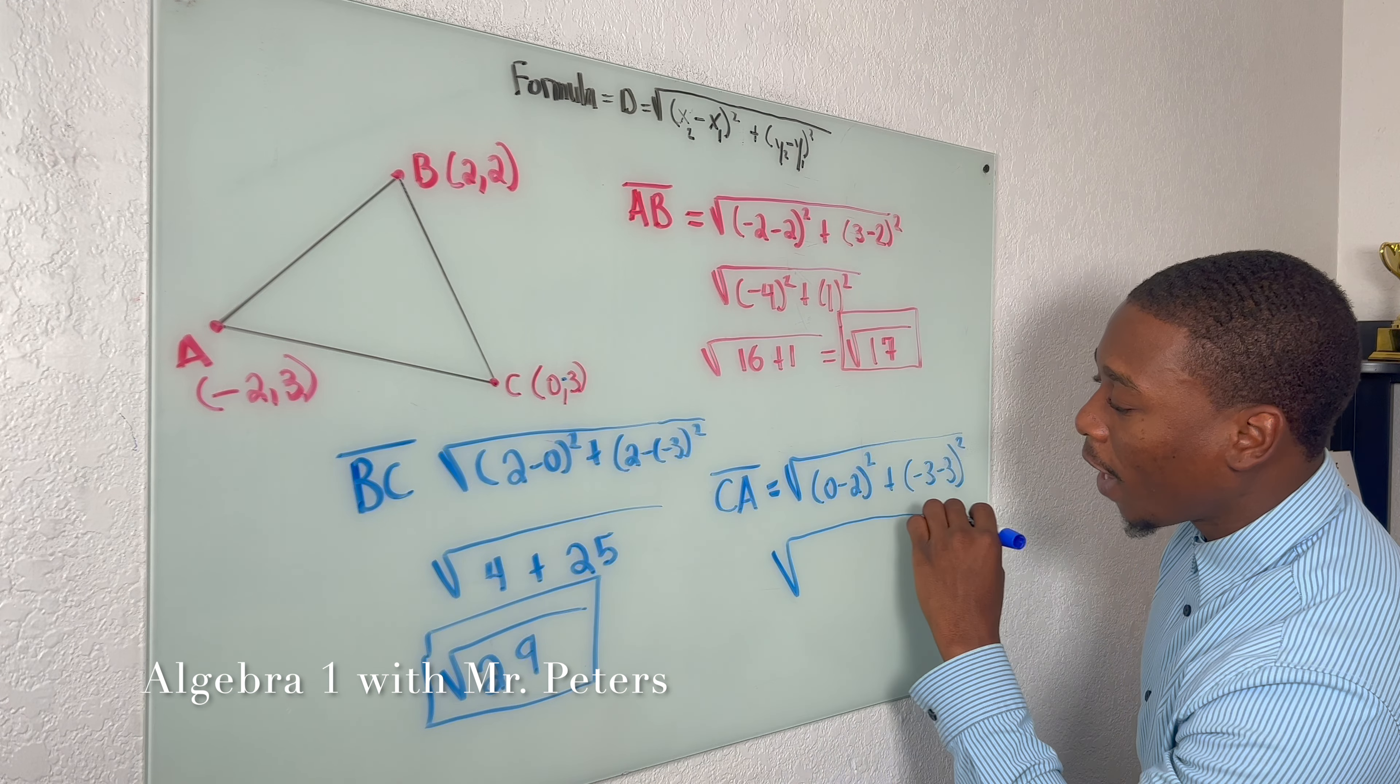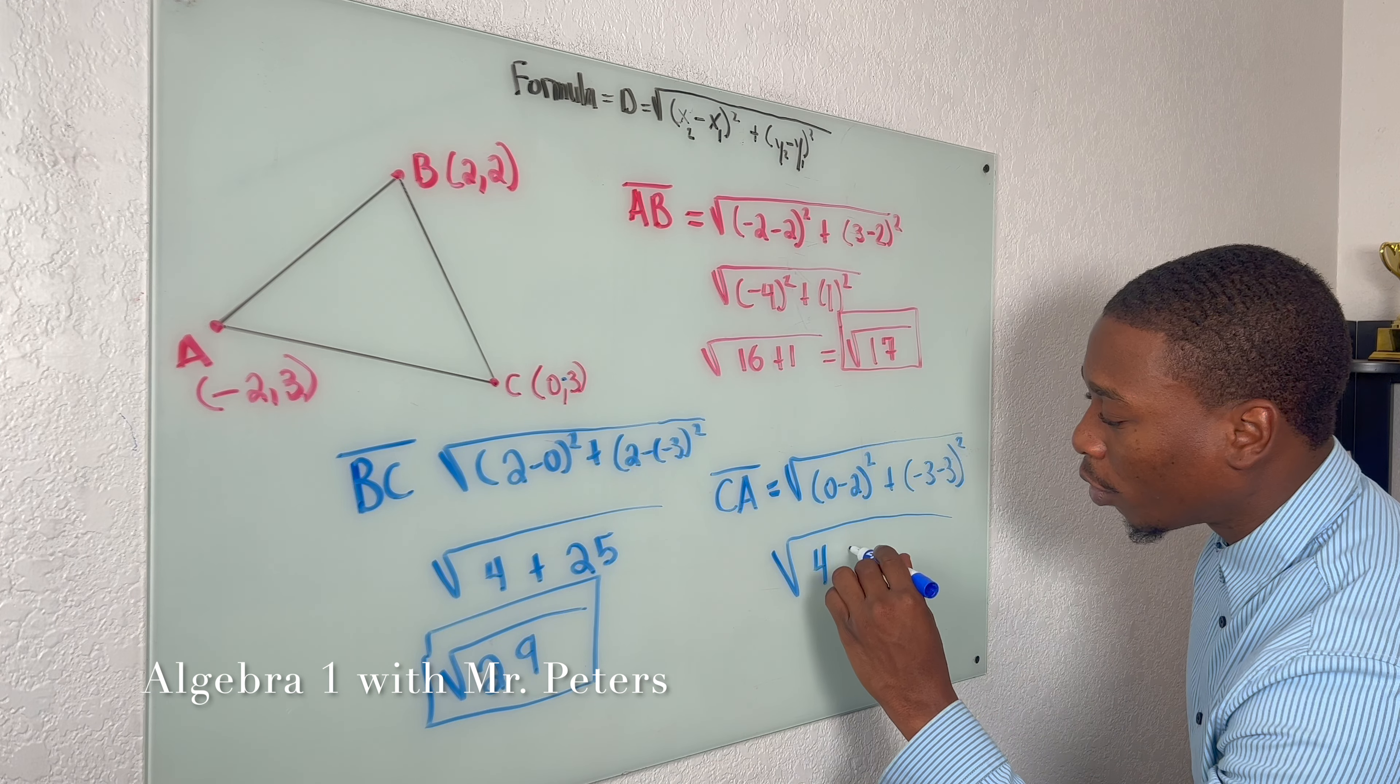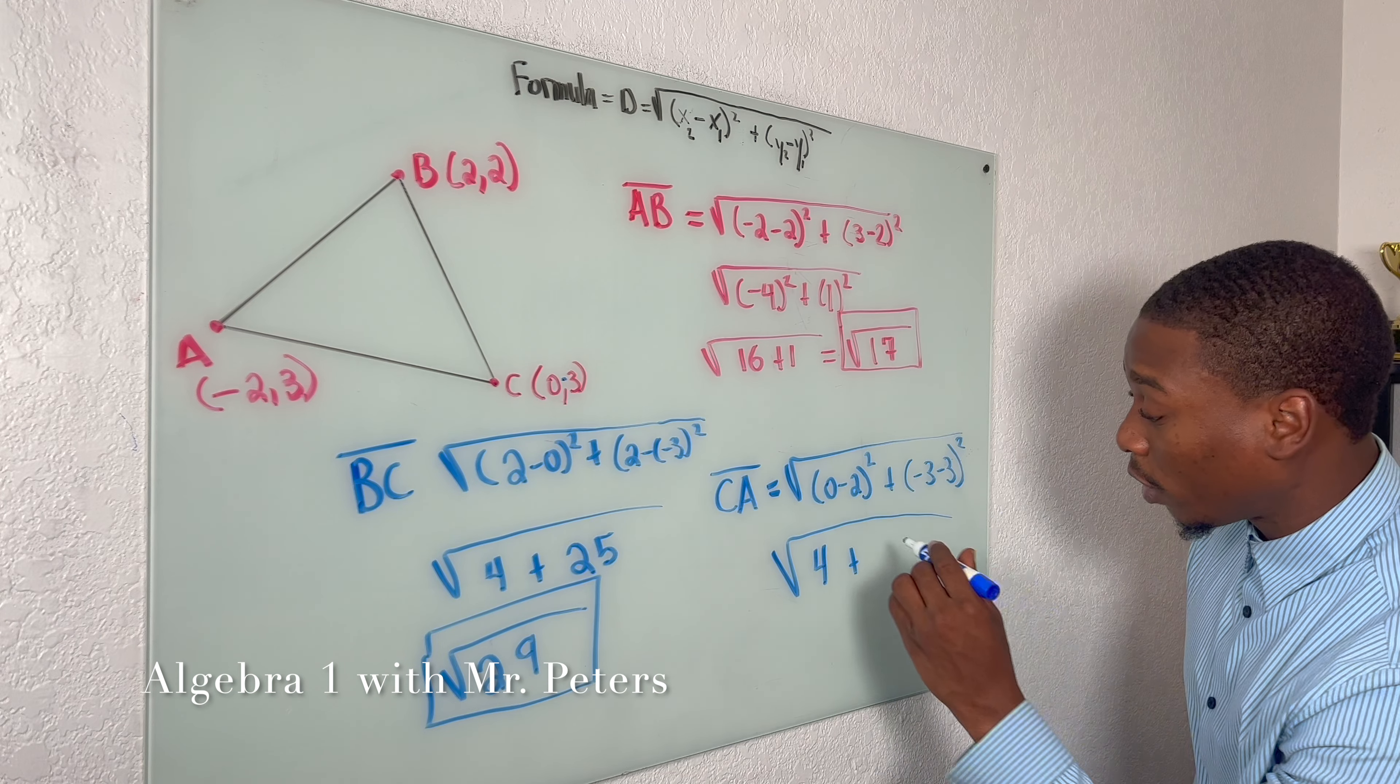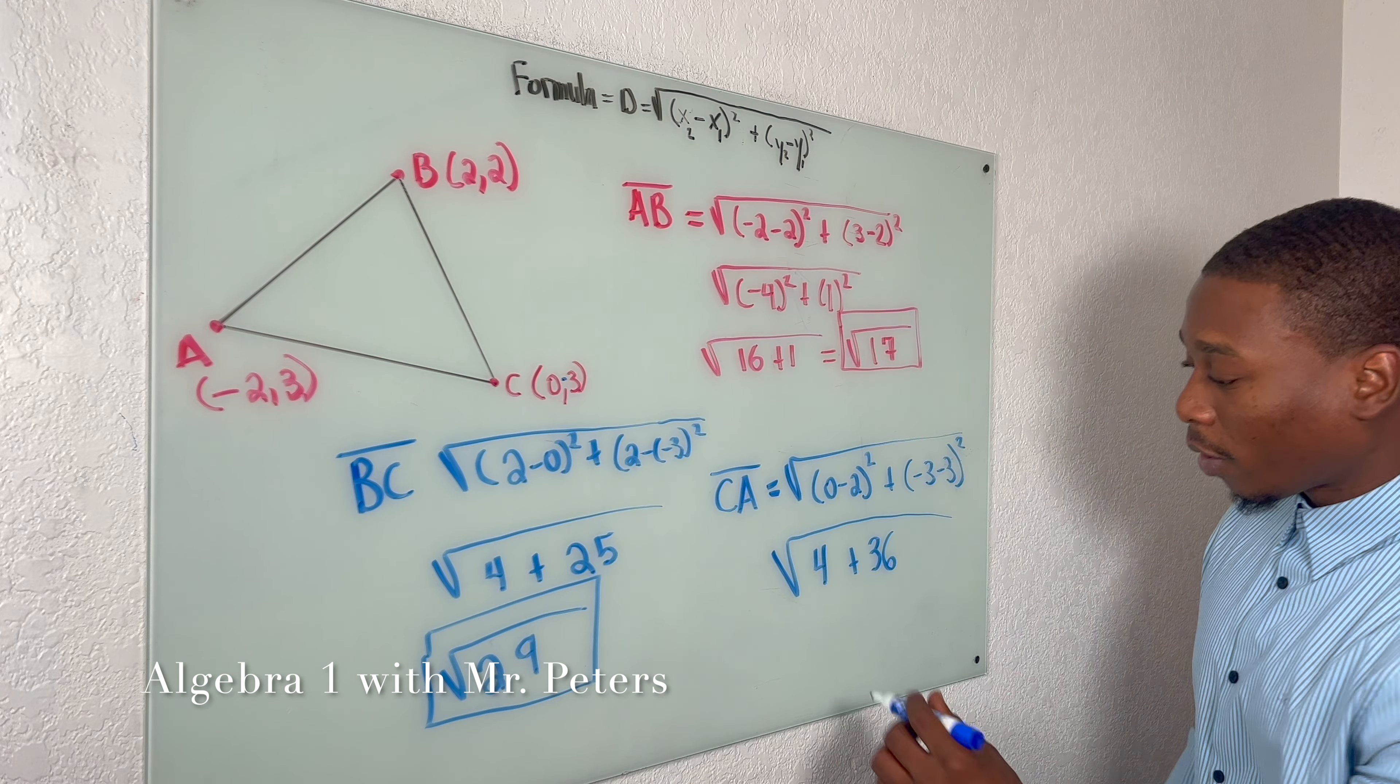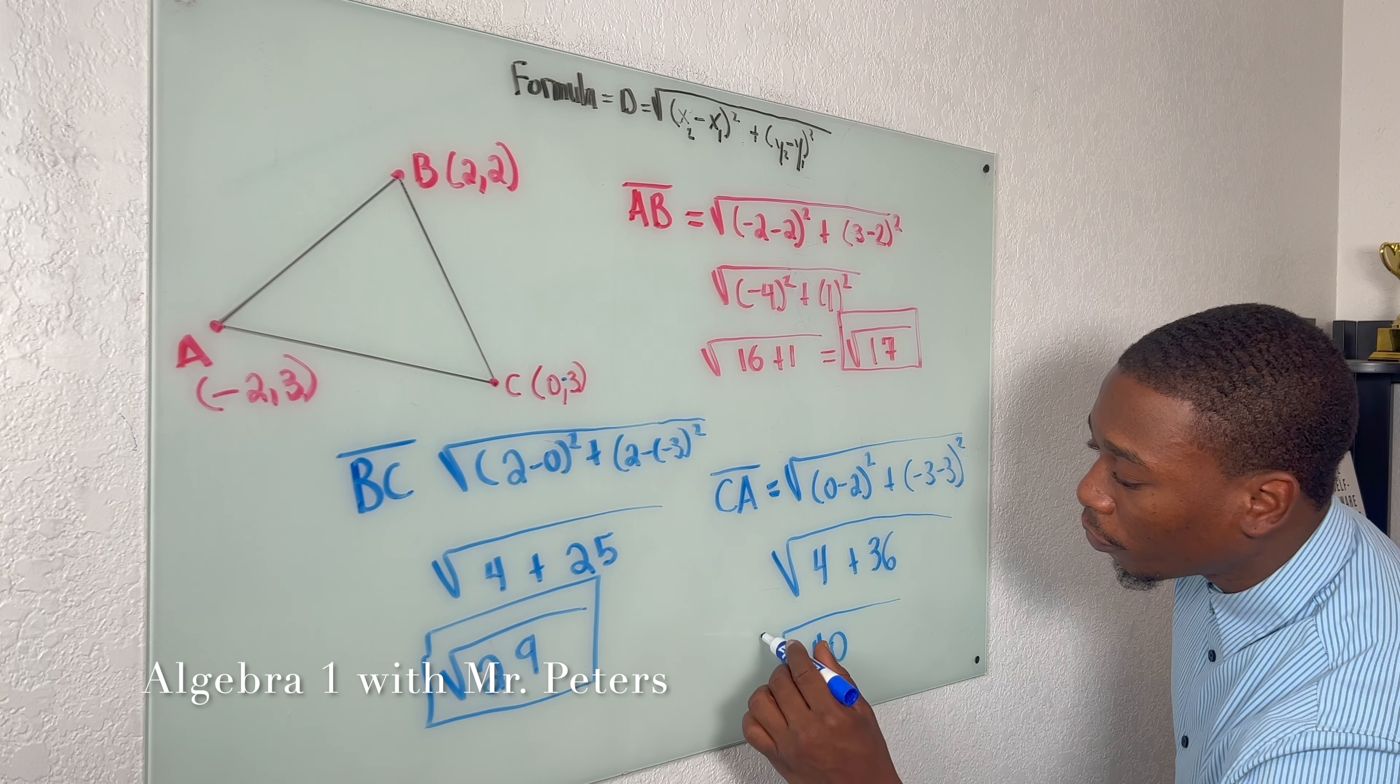So after we simplify, we have (-2)², which gives us a positive 4, and then (-6)² is going to be 36. So at this step here now, our final answer is going to be √40.